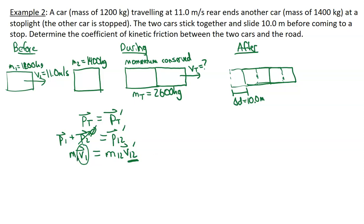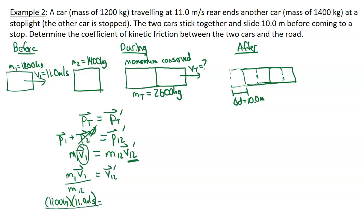Rearranging: V1,2 prime = (M1 × V1) / M1,2. Substituting: M1 = 1,200 kg, V1 = 11 m/s, M1,2 = 2,600 kg. This gives V1,2 prime = 5.07892 m/s in the positive forward direction.